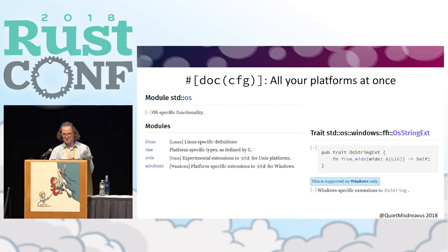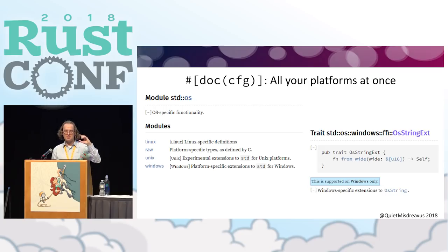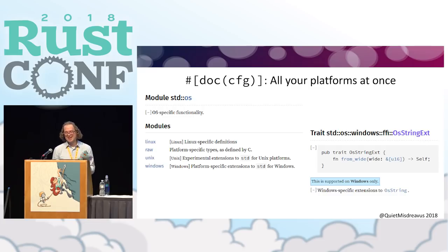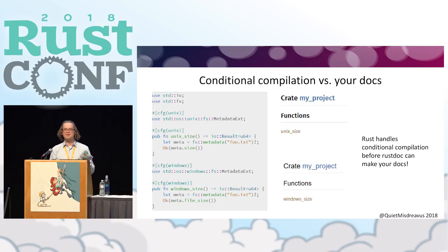`doc(cfg)` is the subject of the next few slides. If you've rummaged around the standard library for a while, you may have noticed the `std::os` module. On the officially hosted docs it has Linux, Raw, Unix, and Windows submodules, some of which are only available on those respective platforms. Behind this platform-specific documentation lies a big problem — because RustDoc leans on the compiler to process code, conditional compilation happens way before RustDoc can get to it.